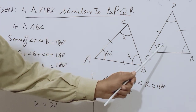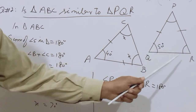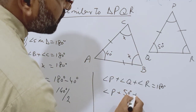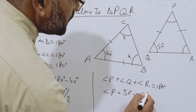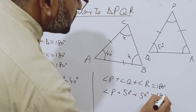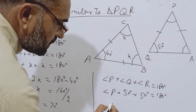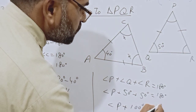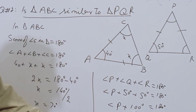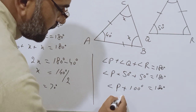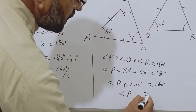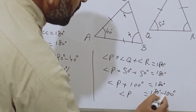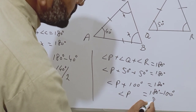Angle R will also be 50 degrees, because both Angle Q and Angle R are base angles of the Isosceles Triangle and have the same value. So in place of Angle R I will write 50 degrees, equal to 180 degrees. 50 plus 50 is 100 degrees, so Angle P plus 100 degrees equals 180 degrees. When we transfer 100 to the other side it becomes minus, so Angle P equals 180 minus 100, and the value of Angle P becomes 80 degrees.